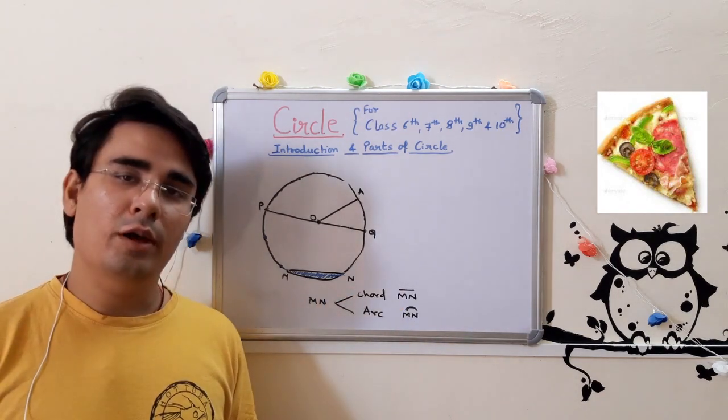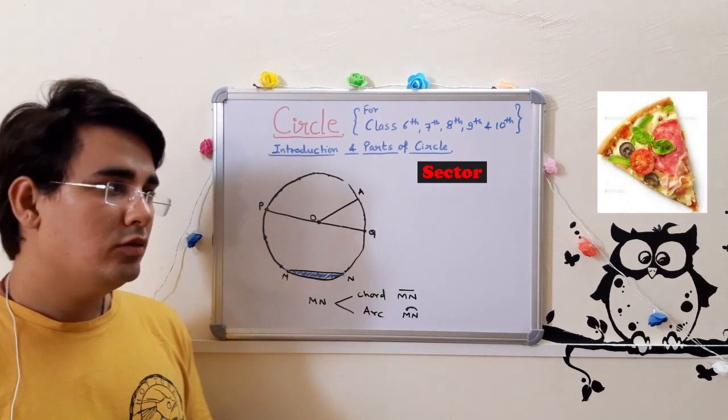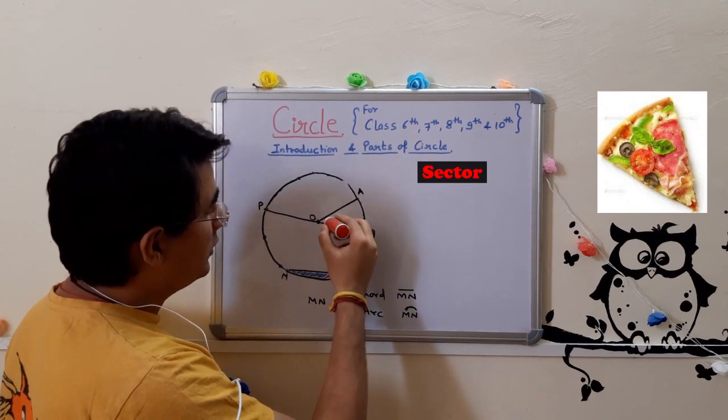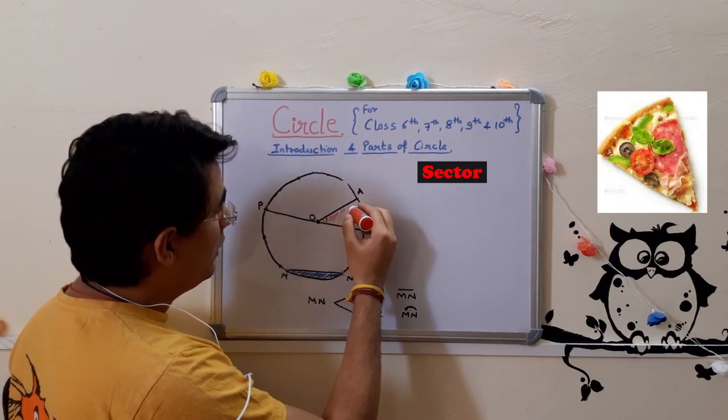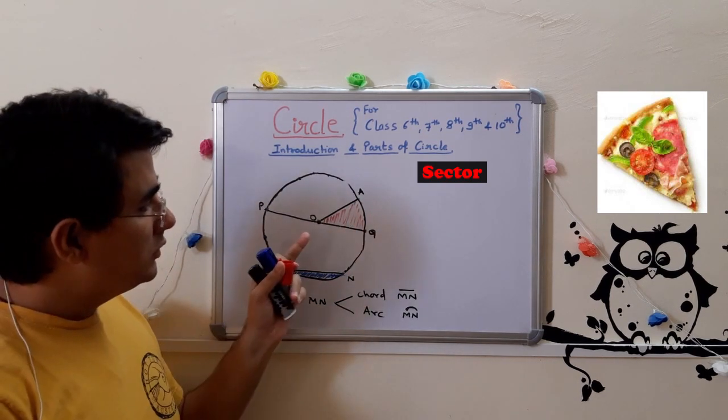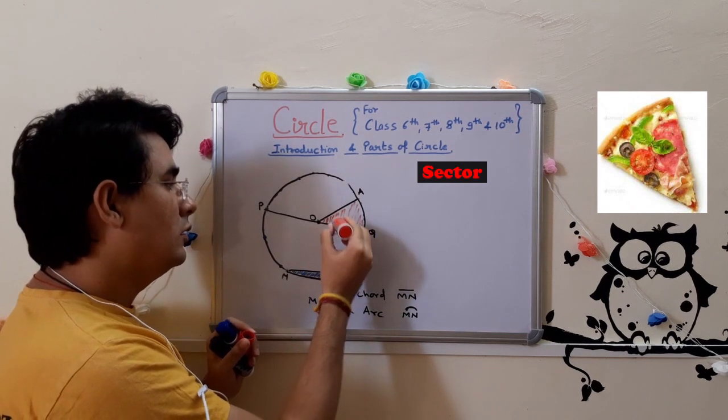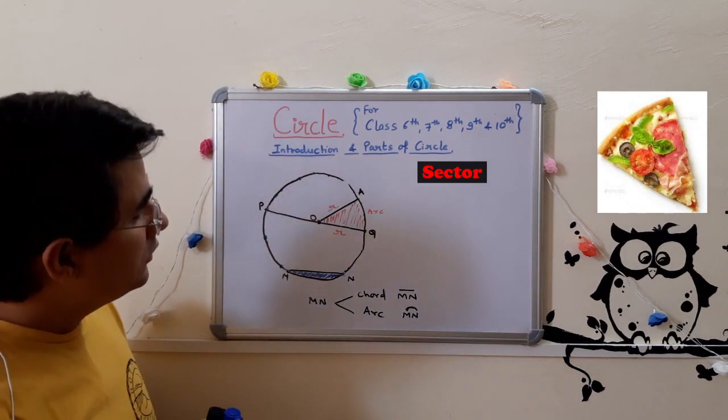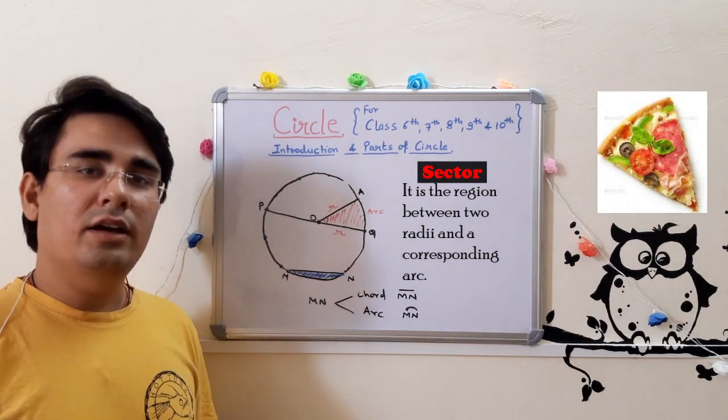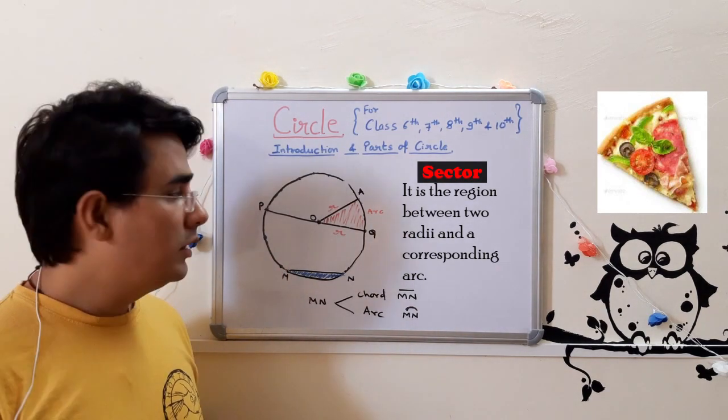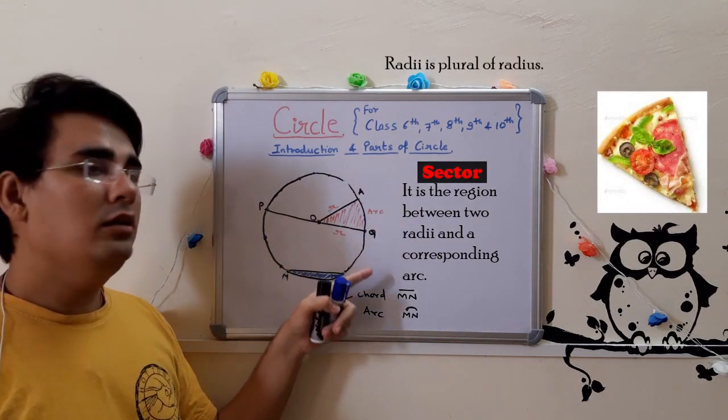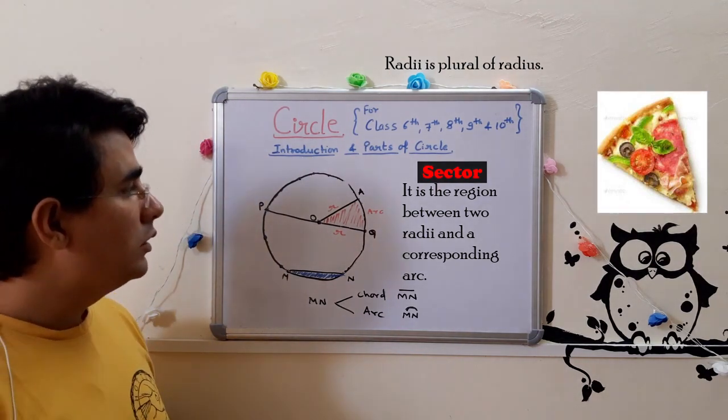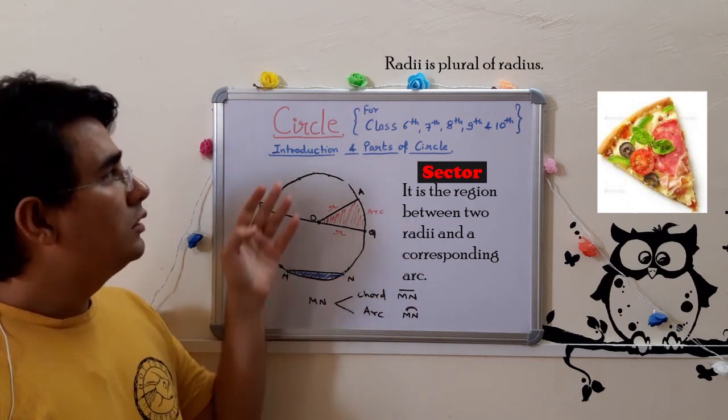But its name is sector, sector of a circle. So let's understand what shape it is. This is the radius and this is the radius. So it is the region between two radii. Radii means plural of radius. It is the region between two radii and the corresponding arc. So sector's definition is this.